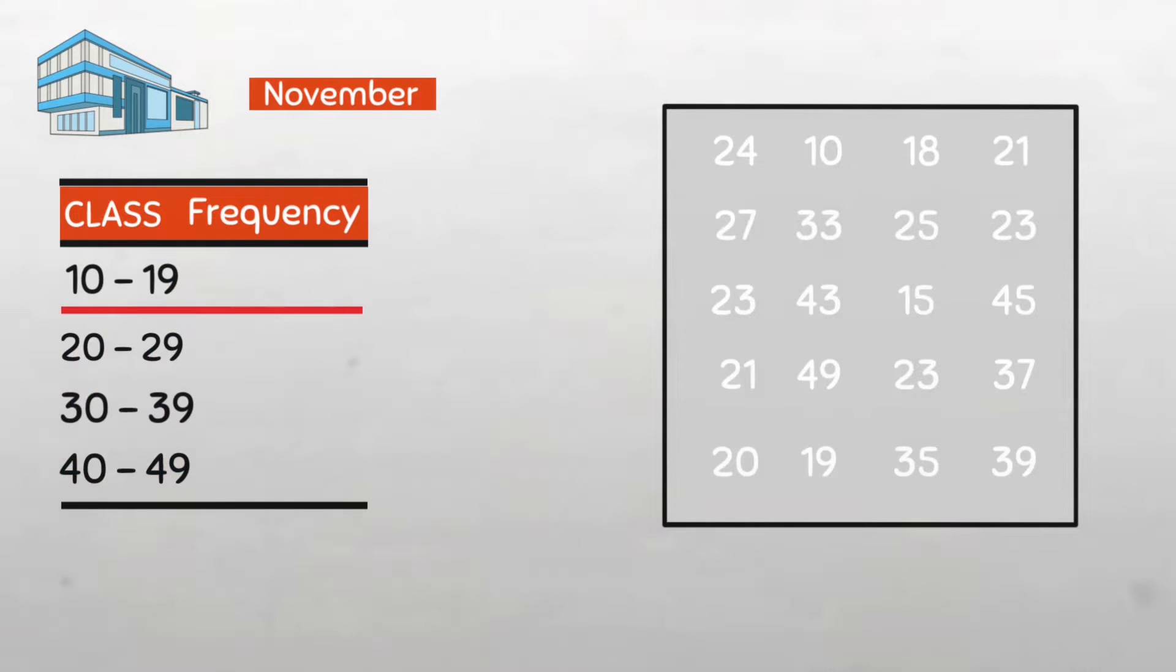For the first class, we'll be counting all the values between 10 and 19. So here we have 10, 18, and then 15, and 19. That's a count of four, meaning this class has four values: 10, 18, 15, and 19.